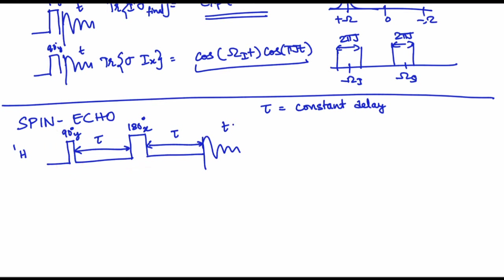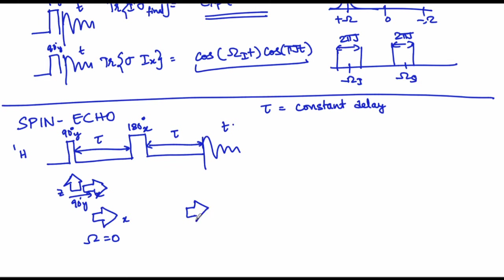If you are doing a very simple conventional bulk magnetization evolution, you will understand that you started along the z axis, which gets converted to the x axis after the application of the 90y pulse. If you are on resonance, the bulk magnetization does not evolve because capital Ω is equal to 0. Since you are applying the 180 degree pulse along x, the bulk magnetization remains along x and therefore you will detect something like this.